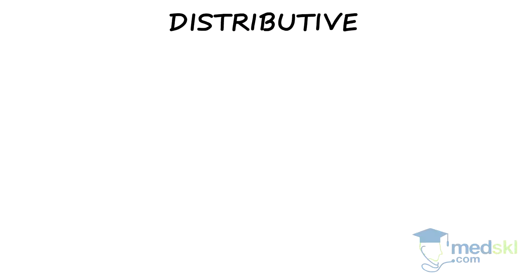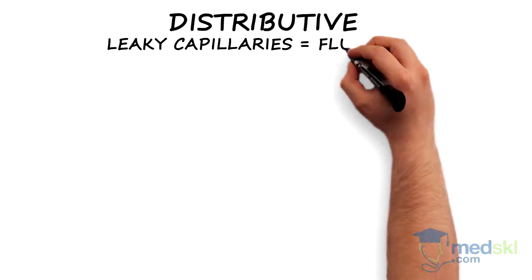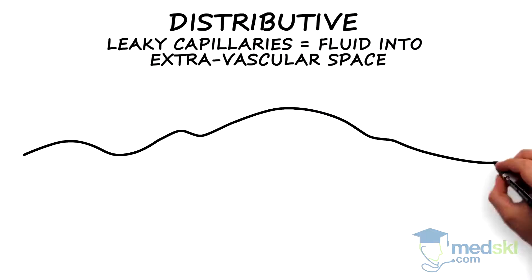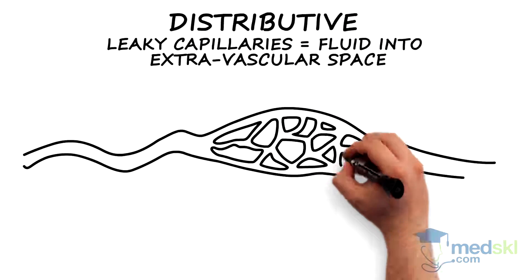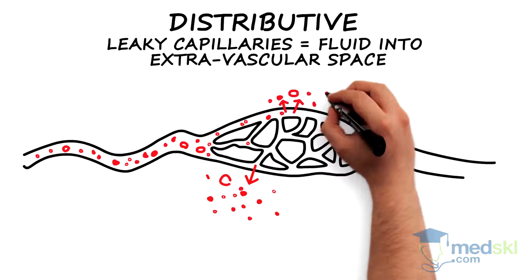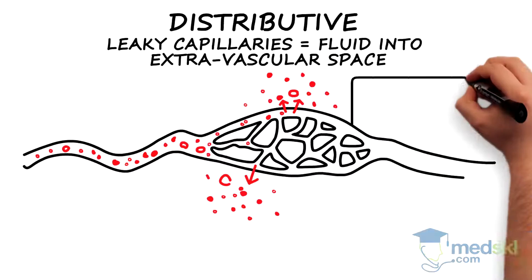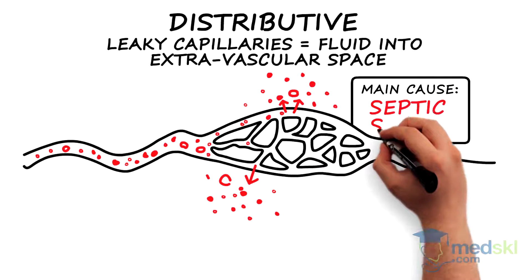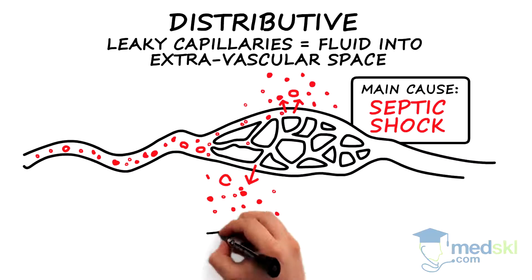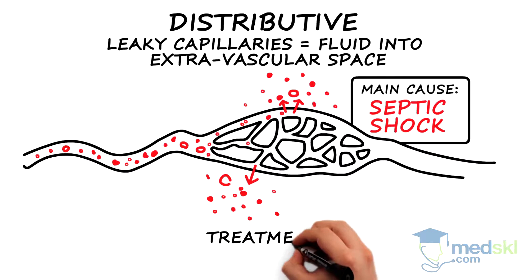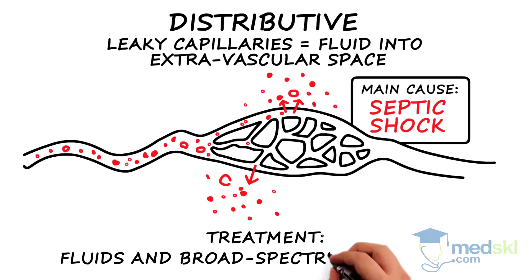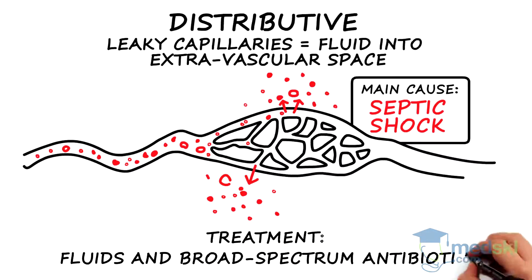Distributive shock is a result of leaky capillaries that allow fluid to move into the extravascular space, making the relative amount of blood left to perfuse organs and cells insufficient. The main cause is septic shock from a severe infection. Treatment involves fluids to optimize intravascular volume and early broad-spectrum antibiotics.